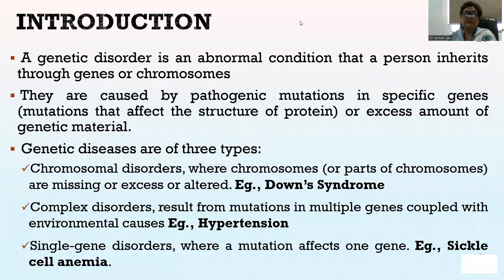A genetic disorder is an abnormal condition that a person inherits through genes or chromosomes. They are caused by a pathogenic mutation in specific genes — mutations that affect the structure of protein or excess amount of genetic material. Genetic diseases are of three types: chromosomal disorders, where chromosomes or part of chromosomes are missing, excess, or altered — example, Down syndrome; complex disorders, resulting from mutations in multiple genes coupled with environmental causes, such as hypertension; and single gene disorders, where a mutation affects one gene — example, sickle cell anemia or thalassemia.